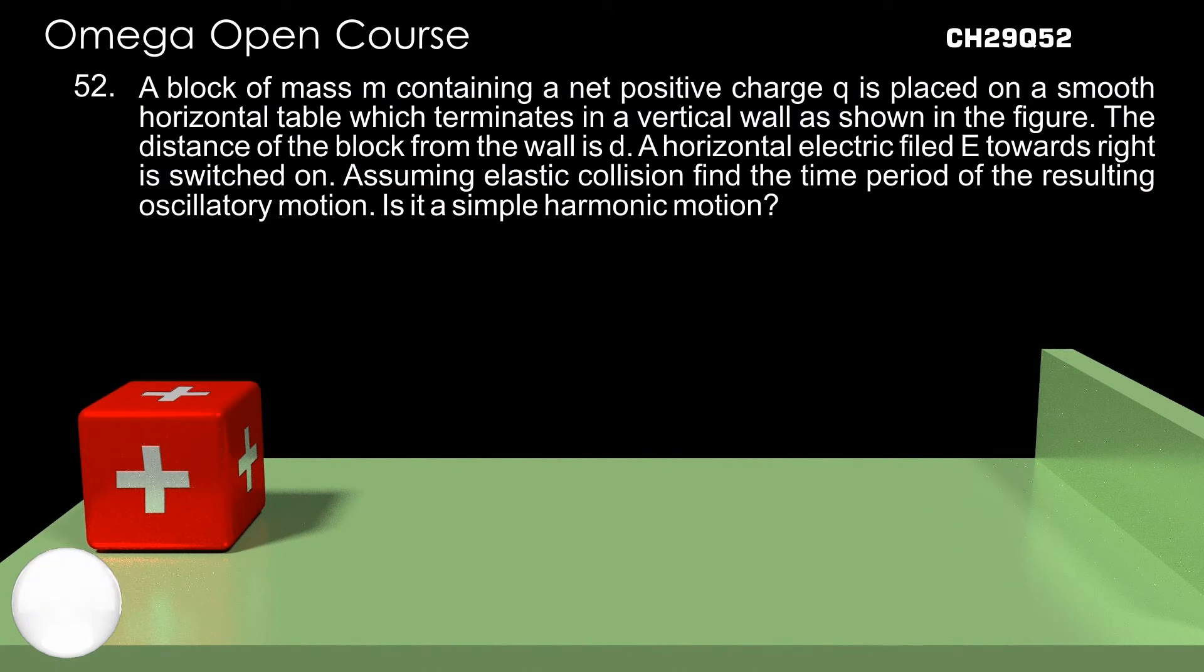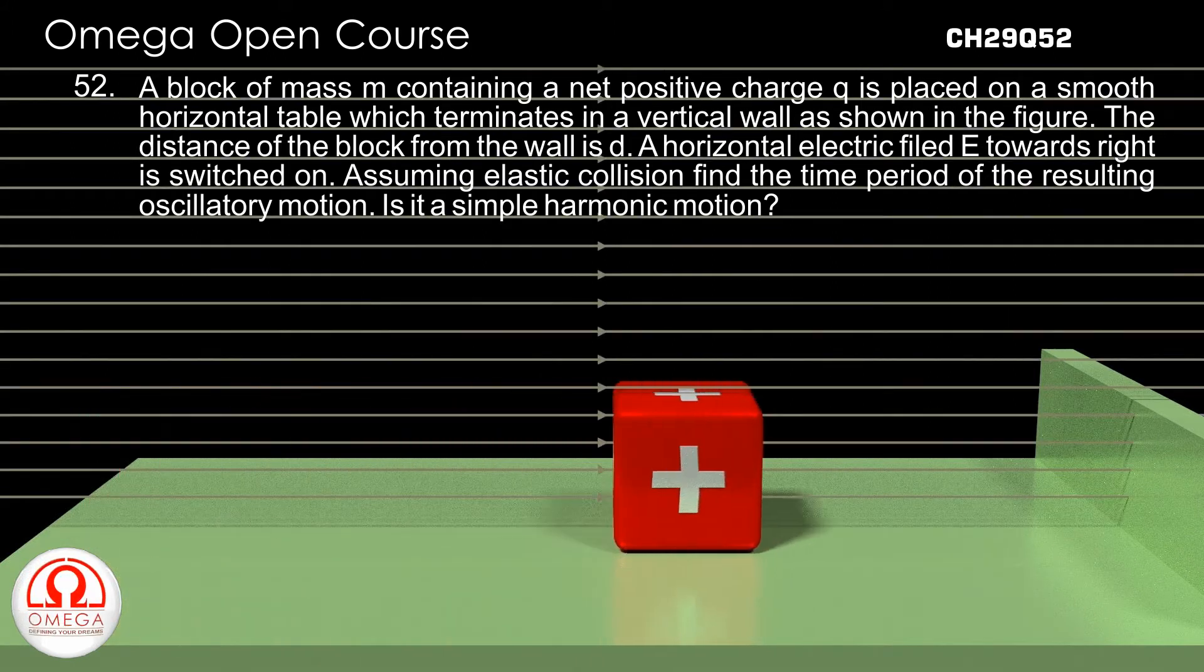A block of mass M containing a net positive charge Q is placed on a smooth horizontal table which terminates in a vertical wall as shown in the figure. The distance of the block from the wall is d. A horizontal electric field E towards right is switched on.